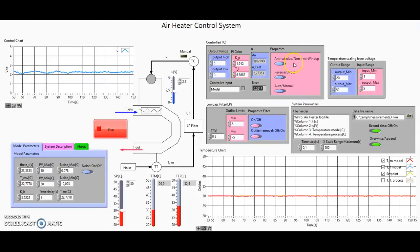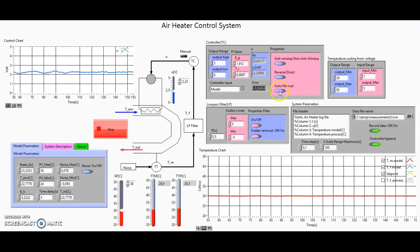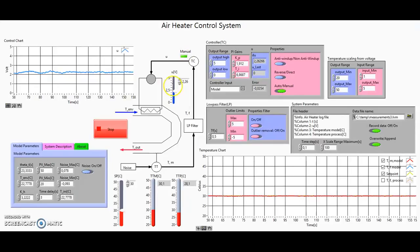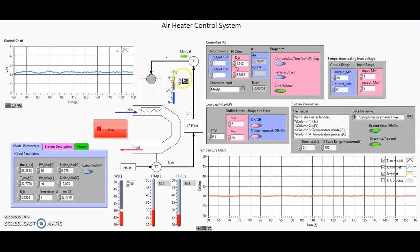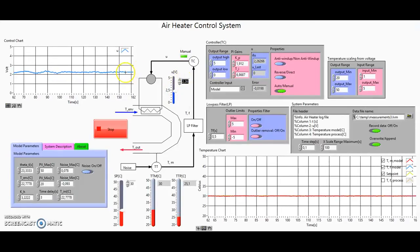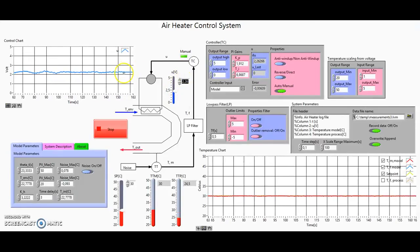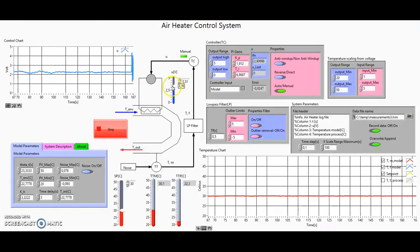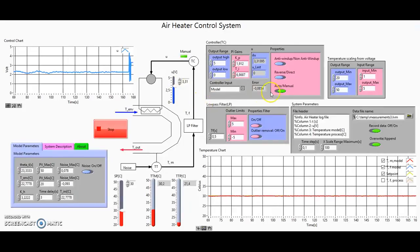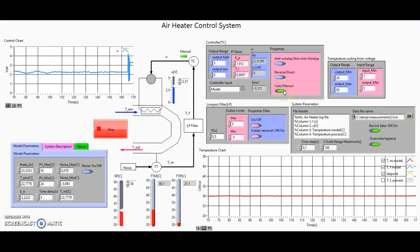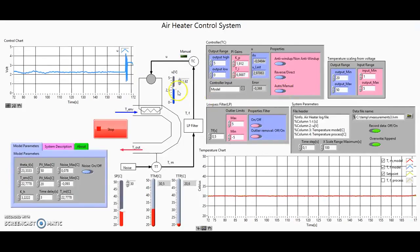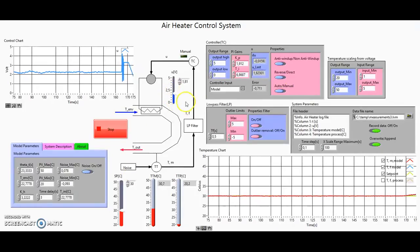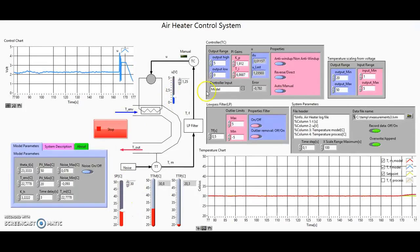Here are some controller properties. You can go from auto to manual — and as you can see, the control value stays the same as it was the last time it was in auto. You can then set the manual value, turn it back to auto, and you get a bumpless transfer back to trying to reach the set point.